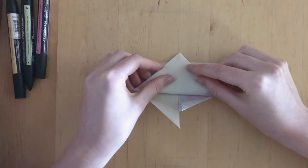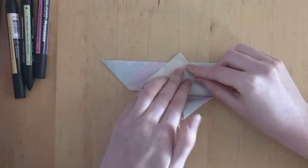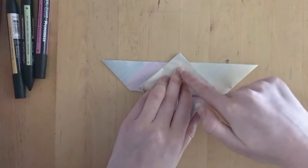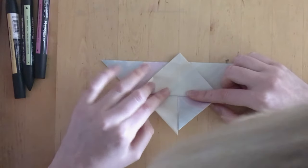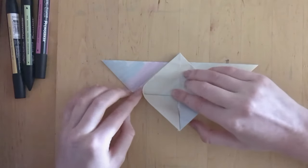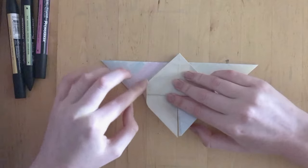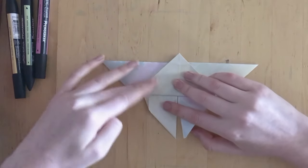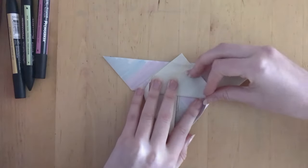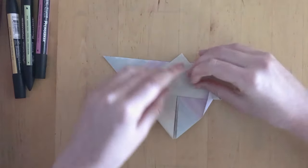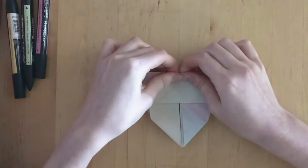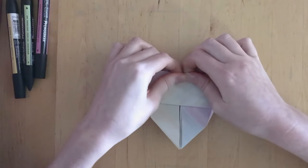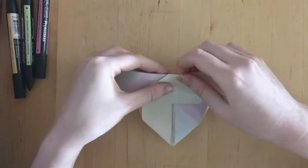We're going to spin it around. You want to bring this point up and over, and you want your triangle to point out over the top. See how it's poking out above the line? There we go. I'm going to fold these little bits in and tuck the top over. I'm going to flip it.